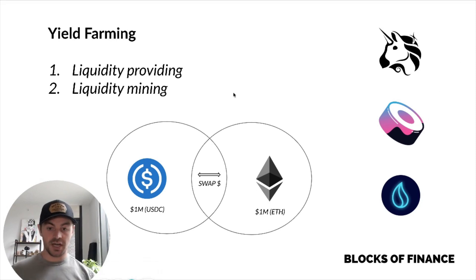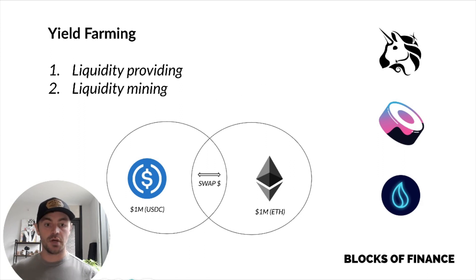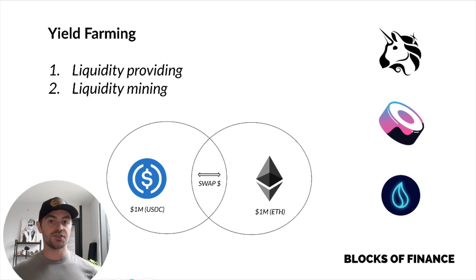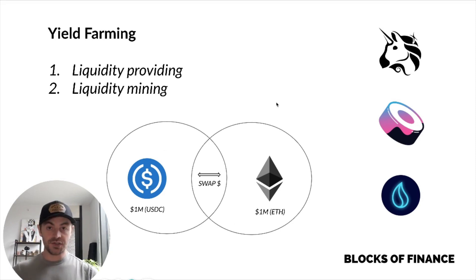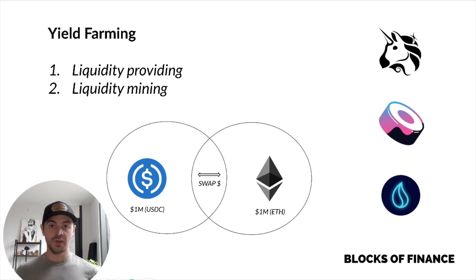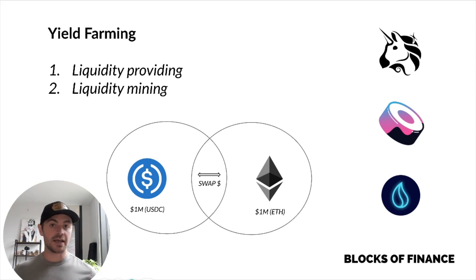So let's talk about liquidity providing first and how it works. The graphic on the screen represents a decentralized exchange such as Uniswap or SushiSwap, also known as an AMM or automated market maker. These exchanges are large pools of crypto assets that contain assets owned by all kinds of different individuals. Here we've got a million dollars worth of USDC, which is a stable coin, and Ethereum — two million total making up one large pool. There could be hundreds of thousands of people that all have their money in that pool together. If somebody wants to come and buy Ethereum for USDC, they can come to this pool and swap one for the other.